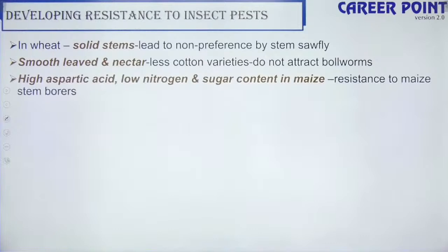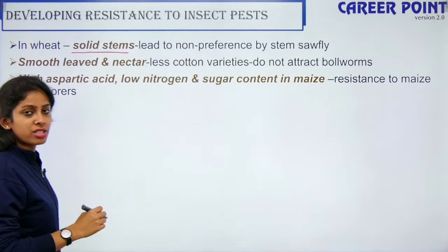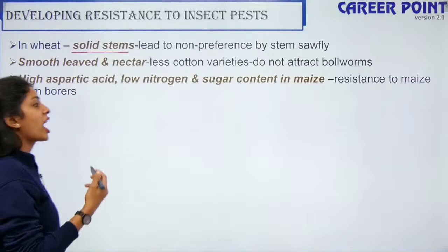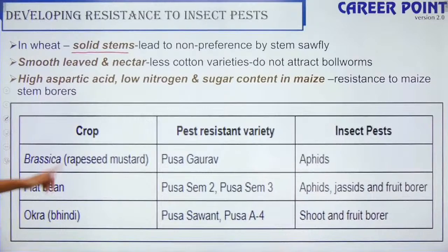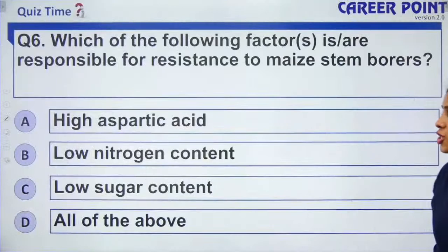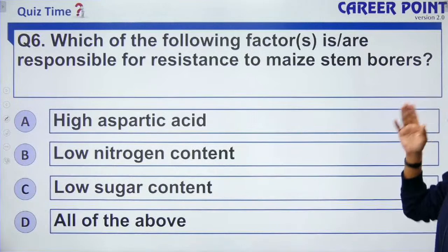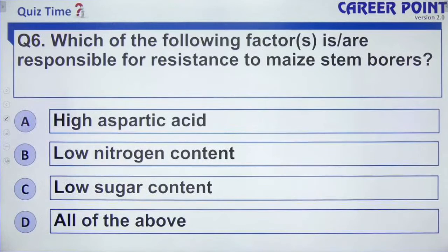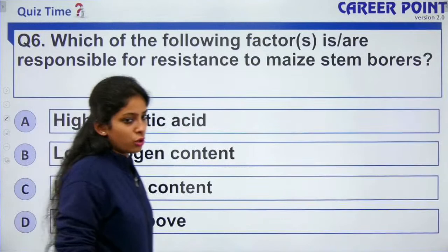Wheat with solid stems is not preferred by stem fly — a natural form of pest protection. Smooth leaves and nectarless cotton varieties are not attractive to bollworms. High aspartic acid, low nitrogen, and low sugar content in maize make it resistant to stem borers. Question: which factors make maize resistant to stem borers? Answer: all of the above — high aspartic acid, low nitrogen content, low sugar content.